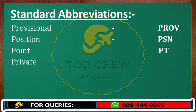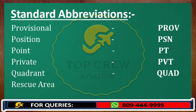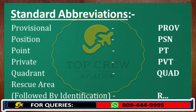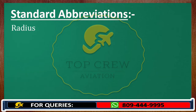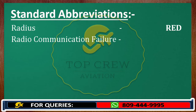Quadrant: QUA. Rescue area followed by identification: R then identification number. Radius: RAD. Radio communication failure: RCF.